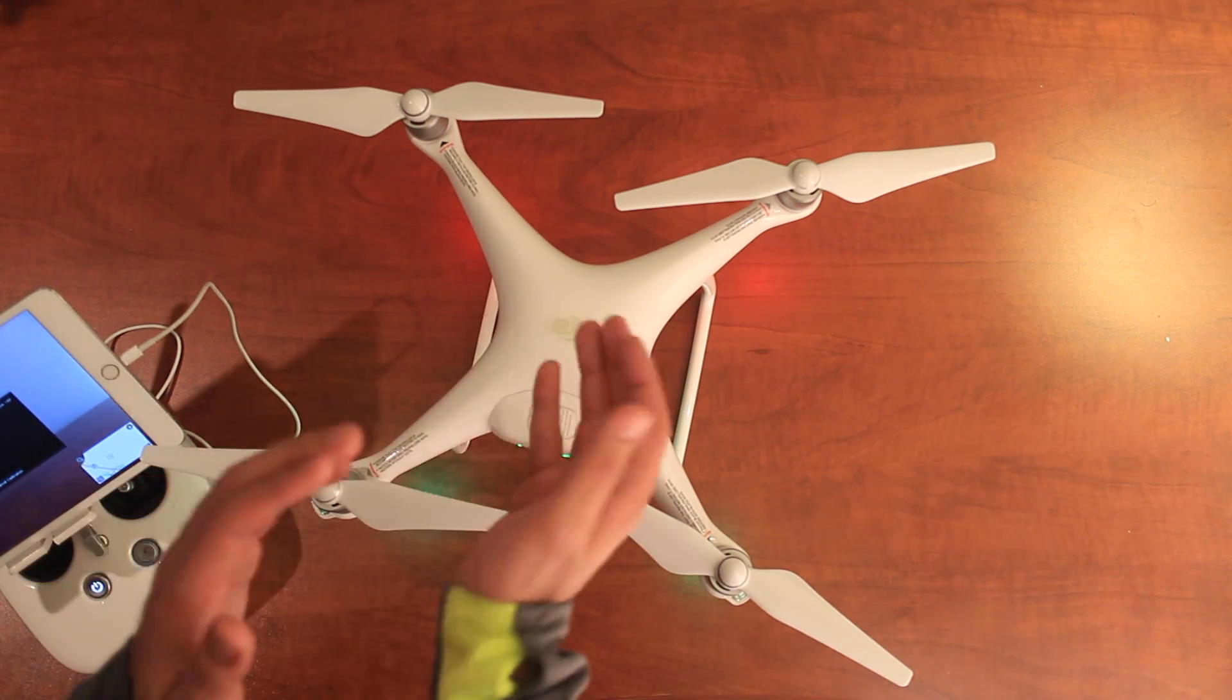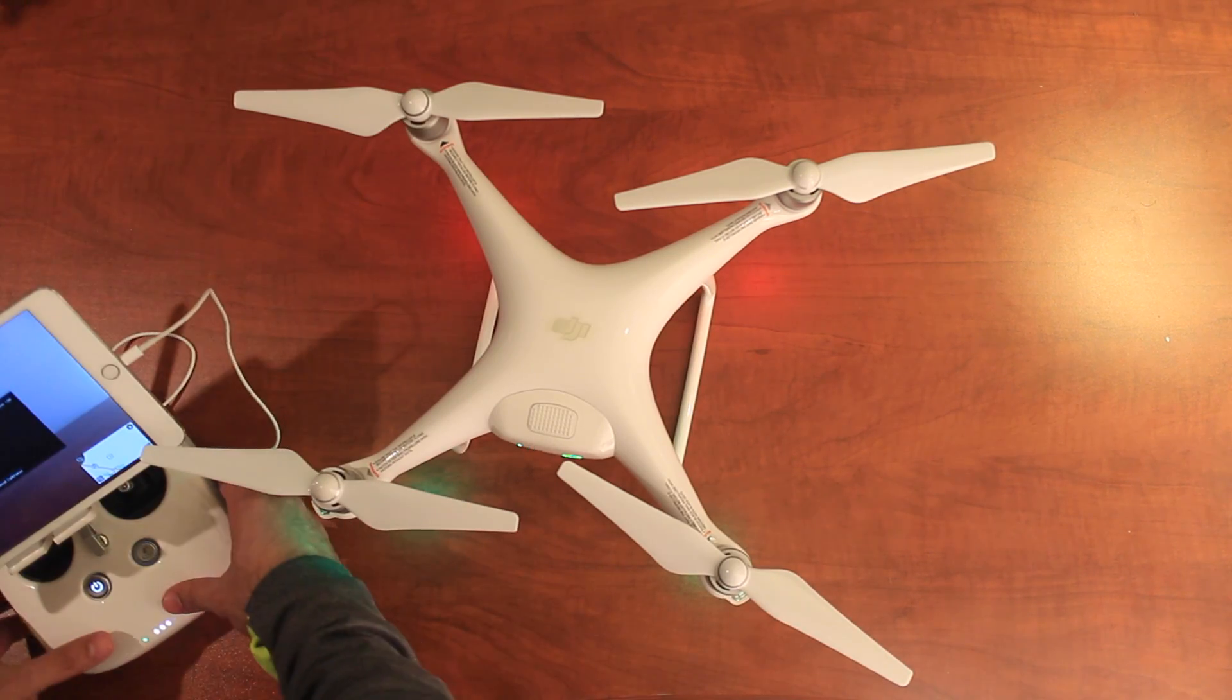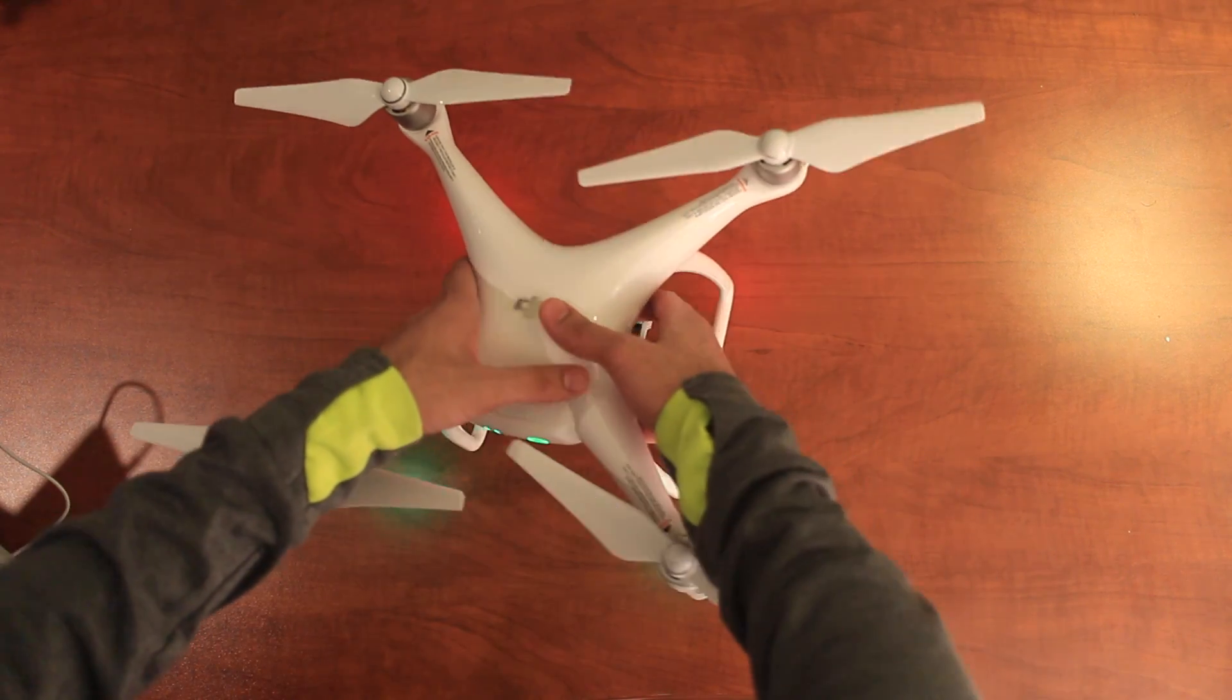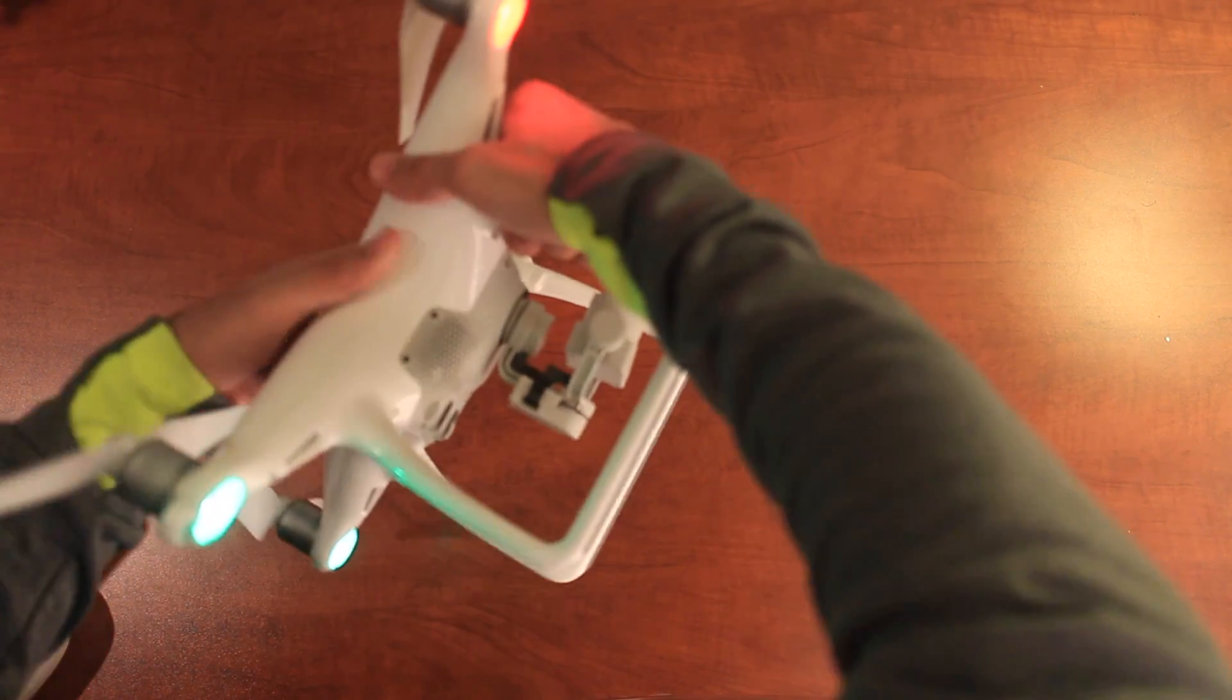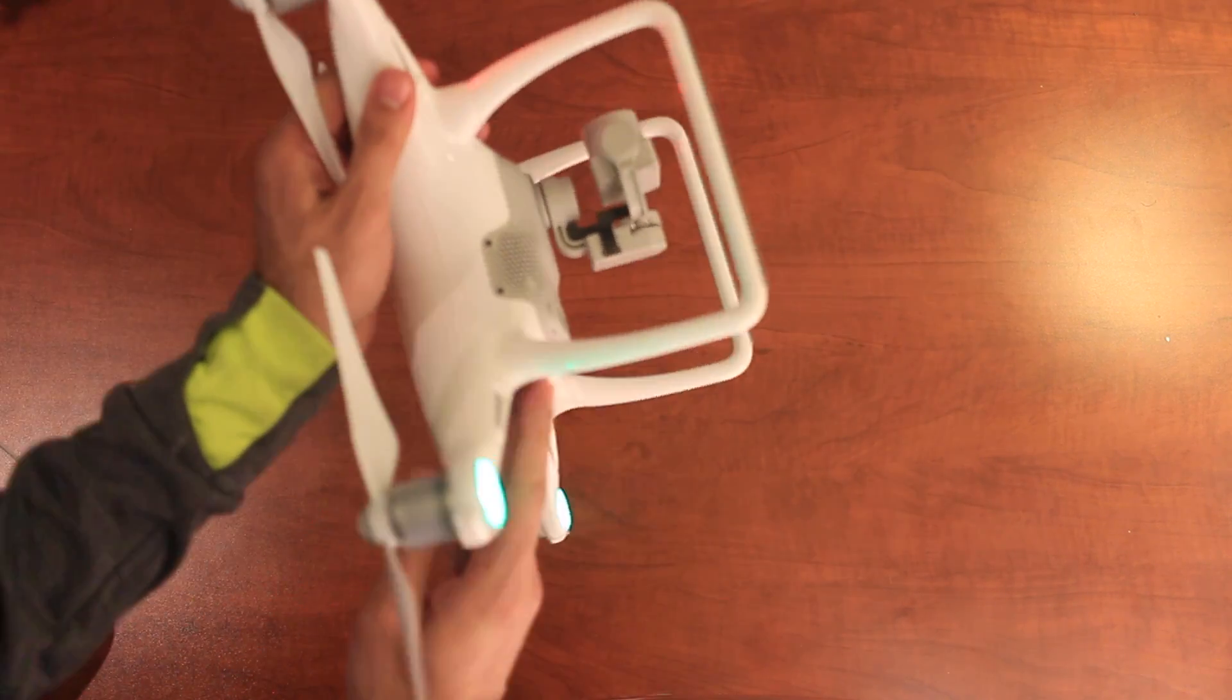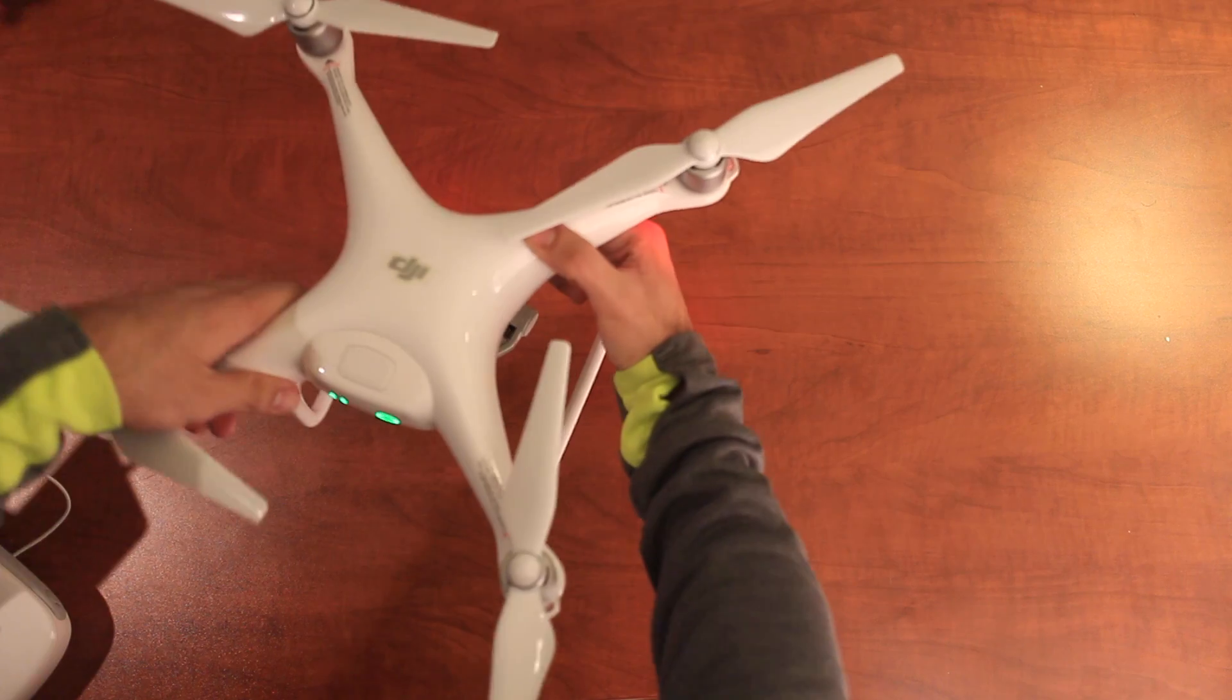Now it's telling you to tilt the drone and do the same thing, 360 degrees clockwise. So I'm going to flip the drone this way and carefully rotate it full 360. And I'll put it down.